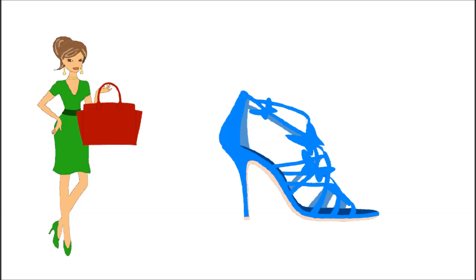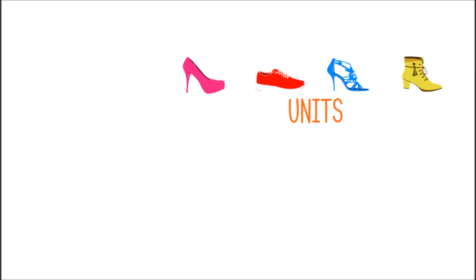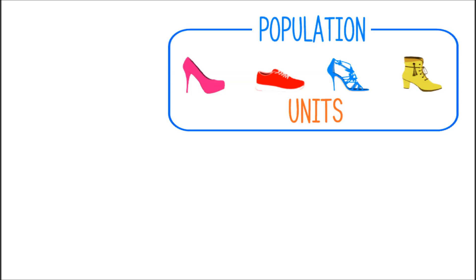Let's recap real quick. How did Lily actually make her decision? Lily had to make her choice between 4 pairs of shoes, basically between 4 objects. In statistics, we would call these objects statistical units. The set of units which can be considered for an analysis is called population. Because Lily has taken only 4 pairs of shoes into consideration, we could say that her population consists of only 4 statistical units. However, in theory, we also could have said that the population consists of all shoes available in shops within Lily's reach.